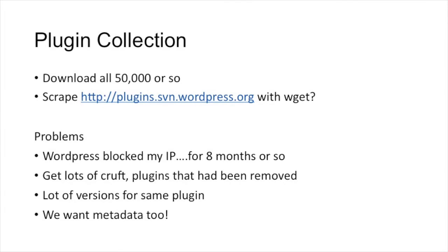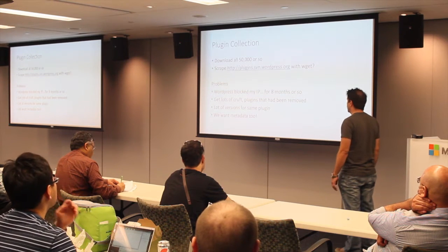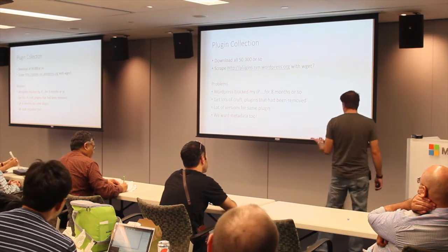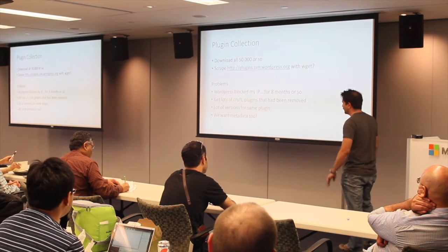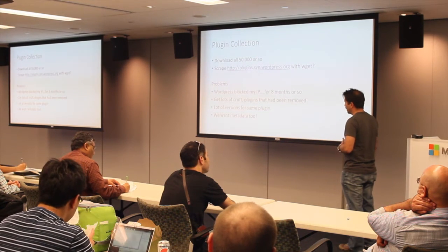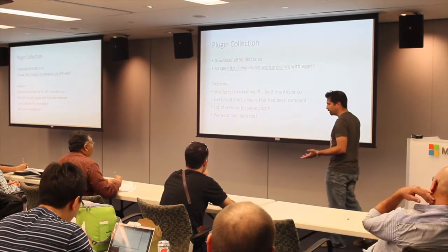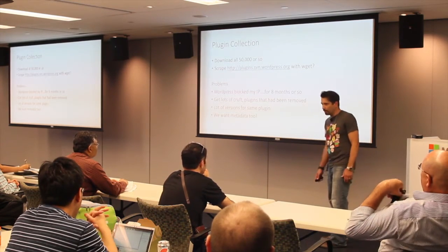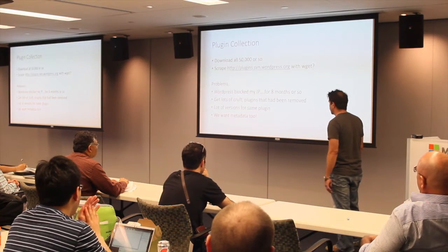First step was to collect plugins. I wanted all 50,000 plugins at once. So I decided to scrape WordPress's plugin SVN source repository page. They got pissed off and blocked my IP address for 8 months. I also got a lot of cruft — multiple versions of the same plugin, plugins removed 4 years ago — just stuff I didn't need. So I had to come up with another way.